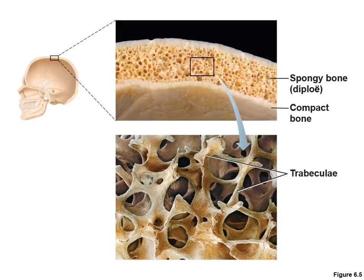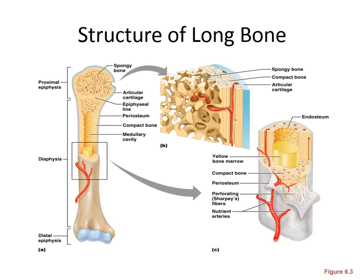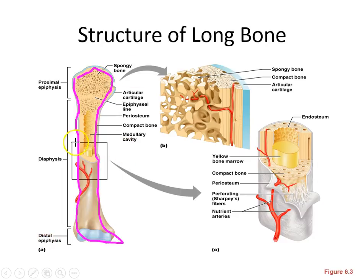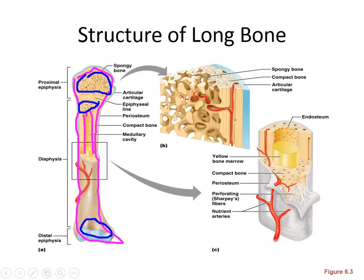Now we're going to look more in depth at a long bone. It's got compact bone running all the way around the side, and the middle is compact bone all the way until there's a space. Whereas the heads on each side have some spongy bone in them. Each end is called an epiphysis — plural epiphyses — and the middle shaft portion is called the diaphysis, which just has the compact bone and the space.